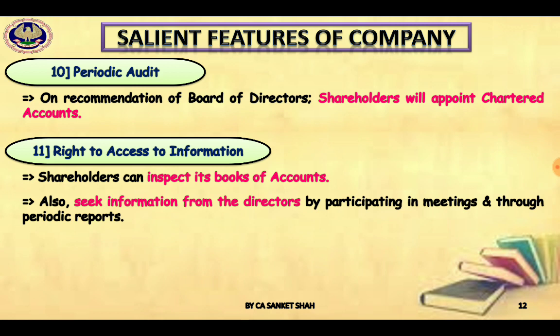Right of access to information: shareholders can inspect books of accounts and seek information from directors by participating in meetings and through periodic reports. So right to access information is also important — shareholders have the right to inspect books of accounts. The 11 salient features are: incorporated association, separate legal entity, perpetual existence, common seal, limited liability, separation of ownership from management, not a citizen, transferability of shares, maintenance of books, periodic audit, and right to access information.